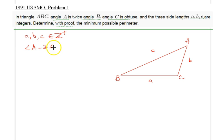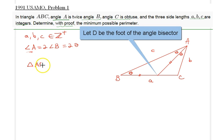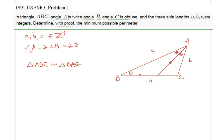We are given that A, B, C are positive integers and angle A measures twice angle B. I'll call angle B as theta. A key move in this solution is to draw the angle bisector from A, so this angle is theta and this is also theta, because angle A is just two times angle B. That gives us a beautiful isosceles triangle, and triangle ADC is similar to triangle BAC by angle-angle-angle similarity.